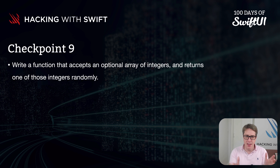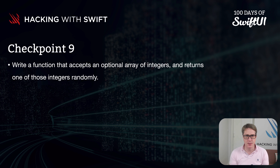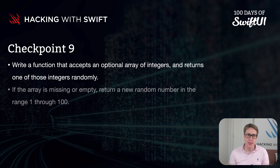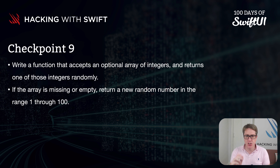You've got to write a function that accepts an optional array of integers and returns one of those integers randomly. If the array is missing or empty, you want to return a new random number in the range of 1 through 100.